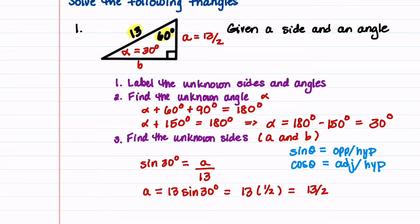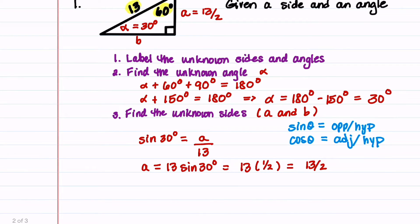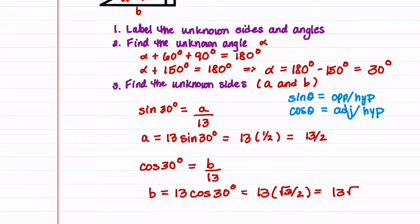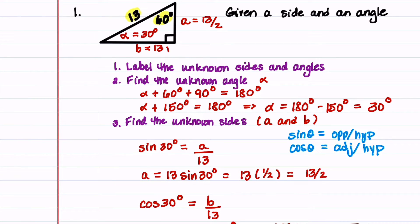To find side B, we use cosine 30 degrees equals B over 13, so B equals 13 times cosine 30 degrees. Since cosine 30 degrees equals root 3 over 2, we get B equals 13 root 3 over 2. We add that to our diagram, and we've now solved the triangle — all unknown sides and angles are found.